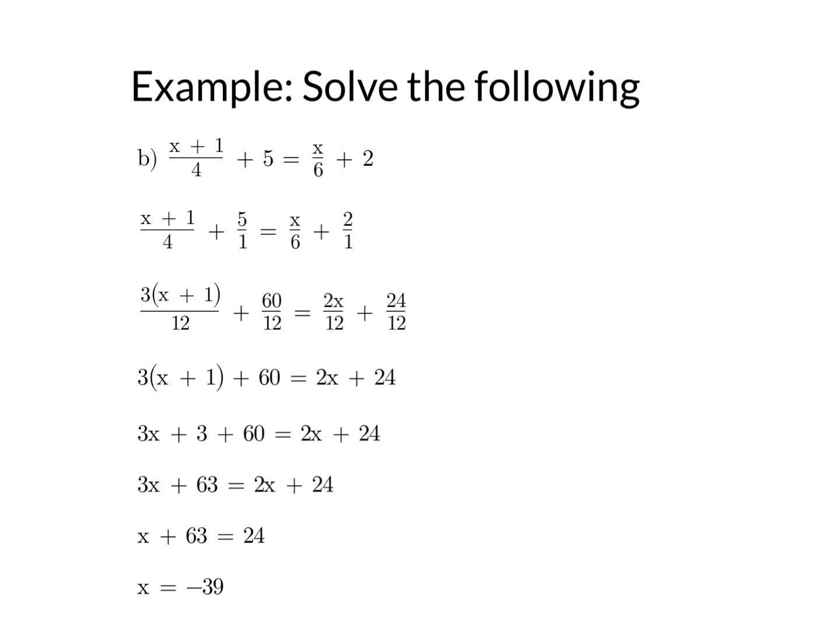Now I've got all my denominators common. So now I just let the numerators equal each other. So 3 outside of x plus 1 plus 60 equals 2x plus 24.